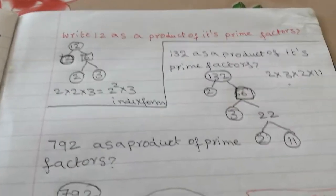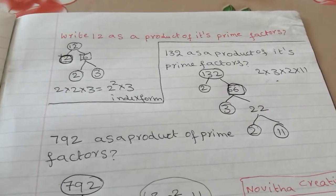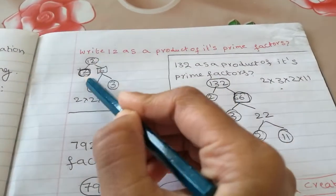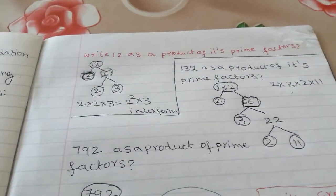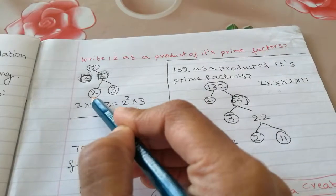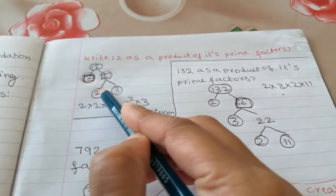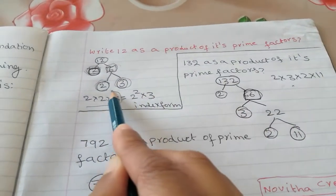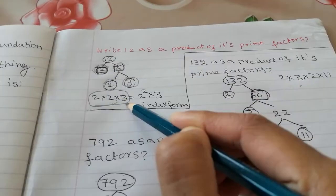Here we will see write 12 as a product of its prime factors. So you need to write 12 and you need to divide with prime numbers. So 2 times 6 and then if you divide again 2 times 3. So we need to take all the prime numbers in this tree. And we will write what are the prime factors of 12: 2 and 2 and 3.